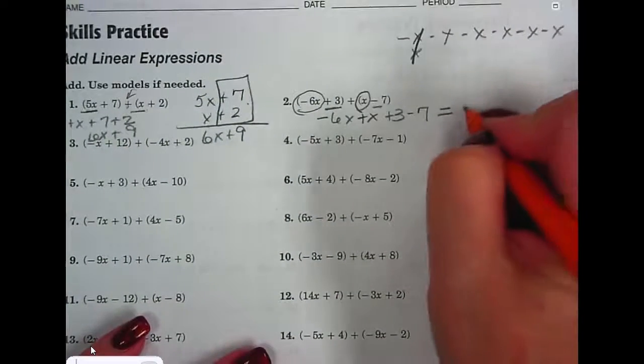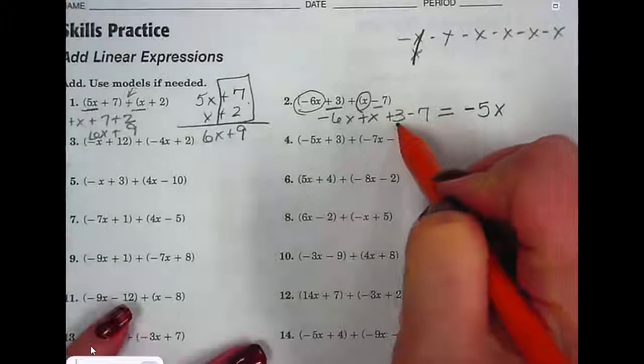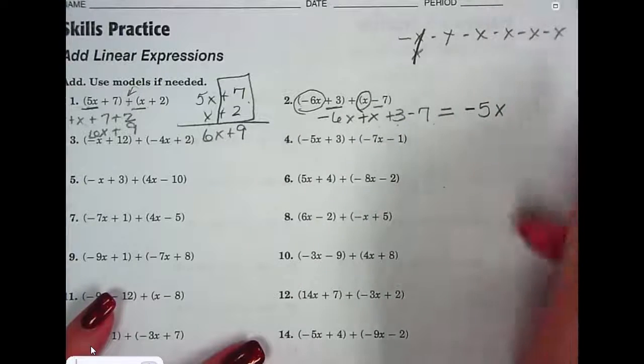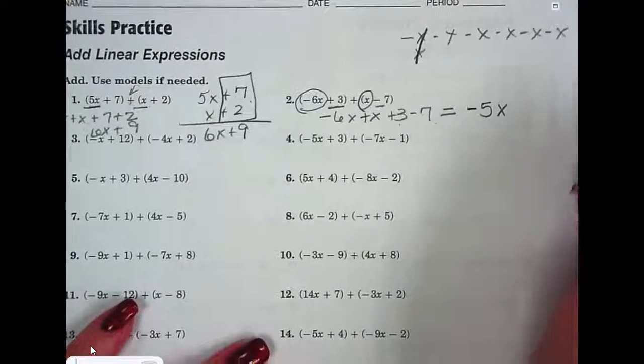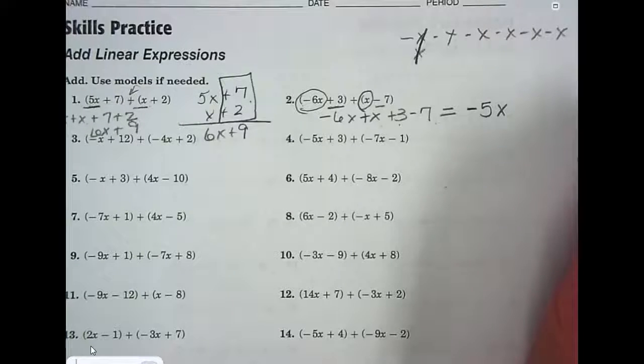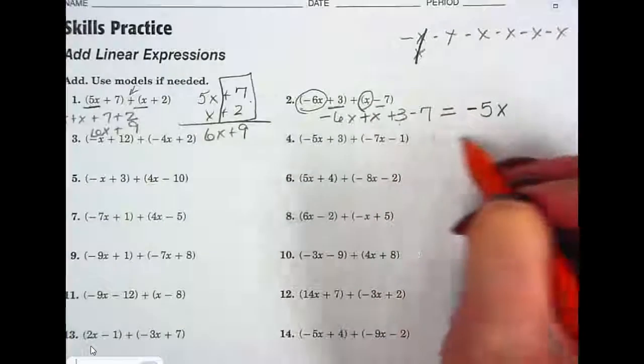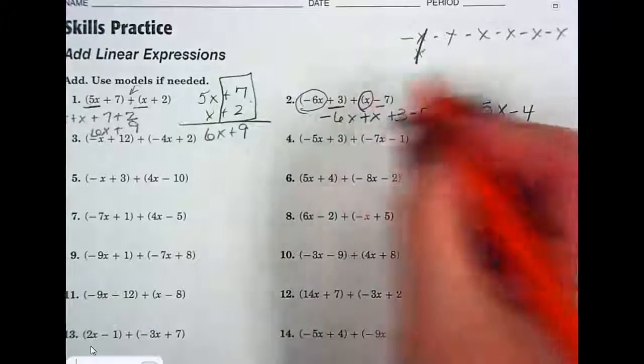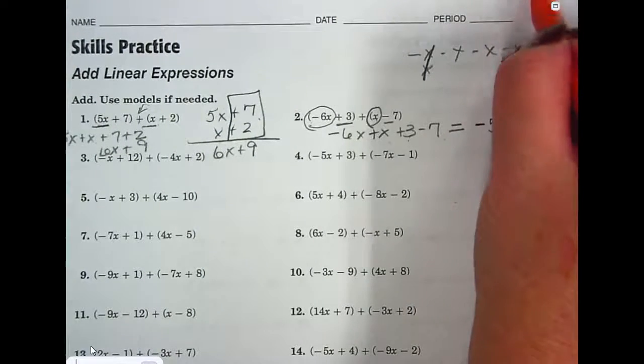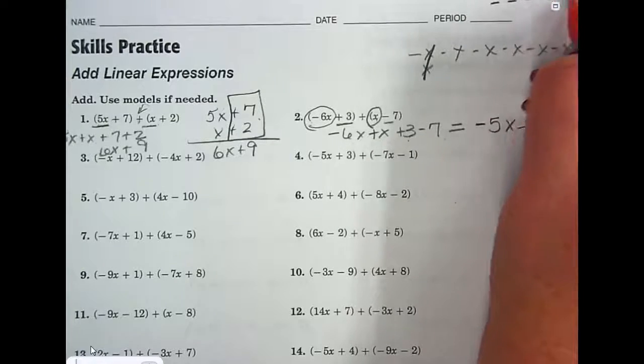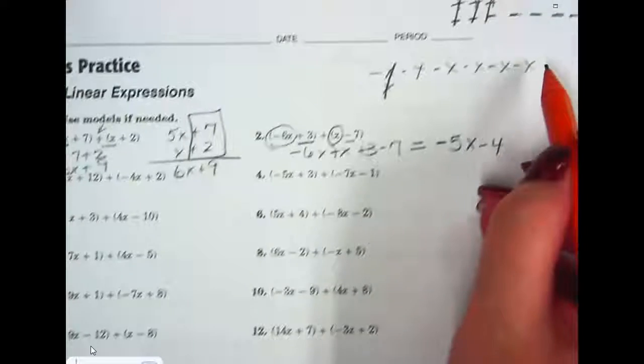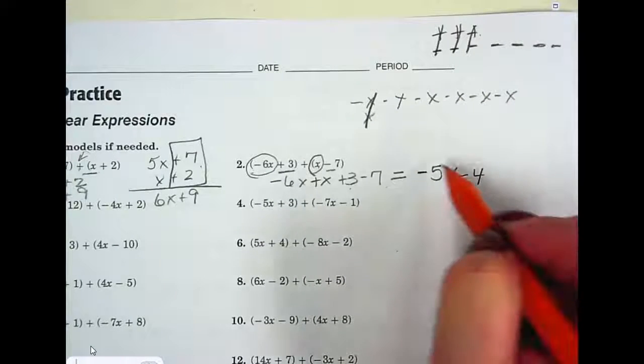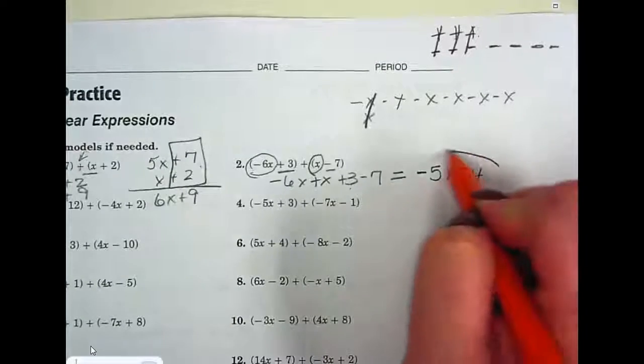5 negatives, negative 5x. You're at positive 3 and you move negative 7. Where do you end up? Negative 1. Eric, you're going to end up at positive 4? Oh no, negative 4. Negative 4. So I could think, start at positive 3 and make 7 jumps in the negative direction. You're going to land at negative 4. Or if you can't do that, 3 positives, 7 negatives. Cross off zero pairs, cross off zero pairs, and you have negative 4. So this answer is negative 5x minus 4.